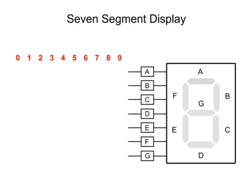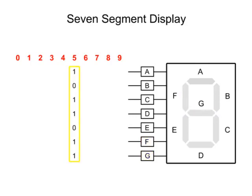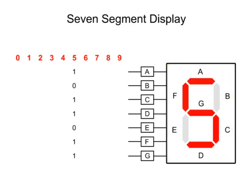Each of the input pins connects to a specific LED segment. By inputting an eight-digit binary number to the corresponding pins of the seven-segment digital display, a particular number can be formed by activation of specific LEDs.